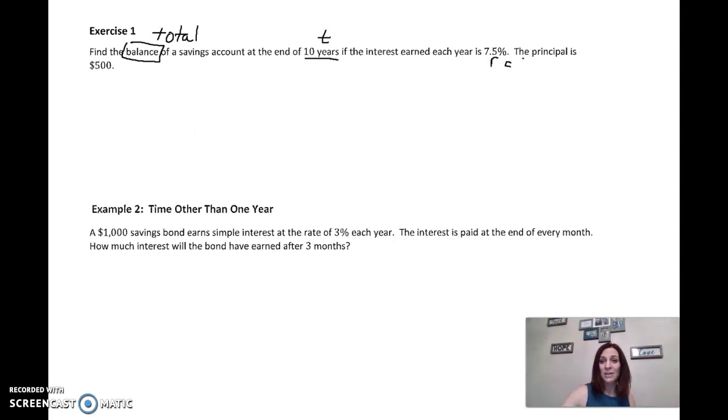But we're going to take 7.5% and I'm going to move it two places to the left. So it becomes 0.075 because we don't multiply by percents. We change them into decimals, drop the percent sign, and then we have our principal here. That's $500. There's our P.